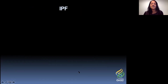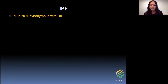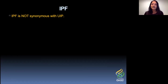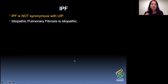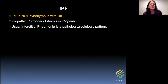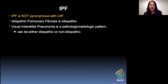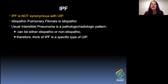Today I'm going to be speaking to you specifically about IPF. The biggest point I want to make is that IPF is not synonymous with UIP. Idiopathic pulmonary fibrosis is truly idiopathic — there is no known cause for it. Usual interstitial pneumonia is a pathologic and radiologic pattern. UIP can be either idiopathic or non-idiopathic. The easiest way to think of this is that IPF is a very specific type of UIP: if it's idiopathic UIP, then it's IPF; if it's non-idiopathic, it's not IPF.